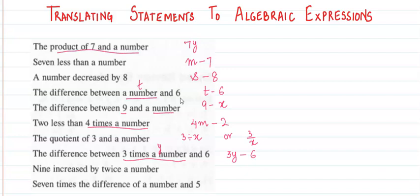Nine increased by twice a number. Twice the number would be say 2m. Twice of m is 2m. So we have to increase it by 9. So let's add 9.